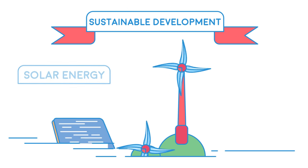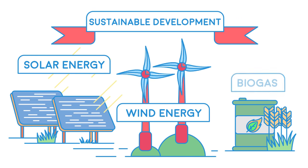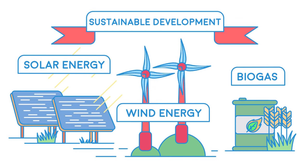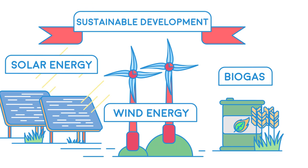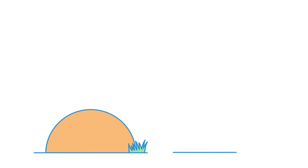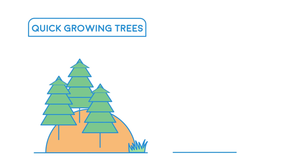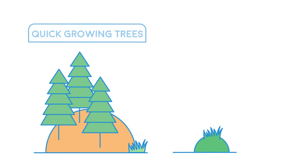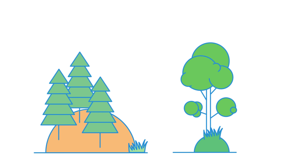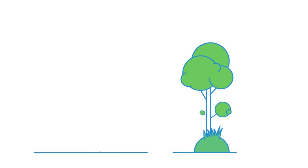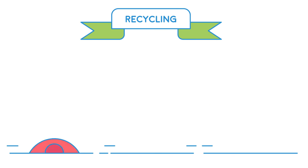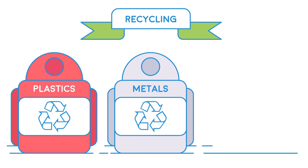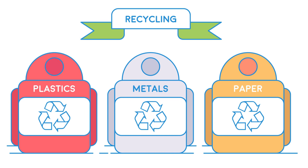This is where sustainable development comes in. One way is to use renewable resources such as solar energy, wind, and biogas to generate electricity rather than fossil fuels. Another example is using quick-growing trees like pine as a source of wood. These trees can be cut down and replanted, providing an ever-ready supply. This is more sustainable than using slow-growing trees like oak, which take hundreds of years to reach maturity.